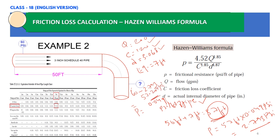In this way we calculate the friction losses as well as the pressure gauge reading at the other end of the pipe.